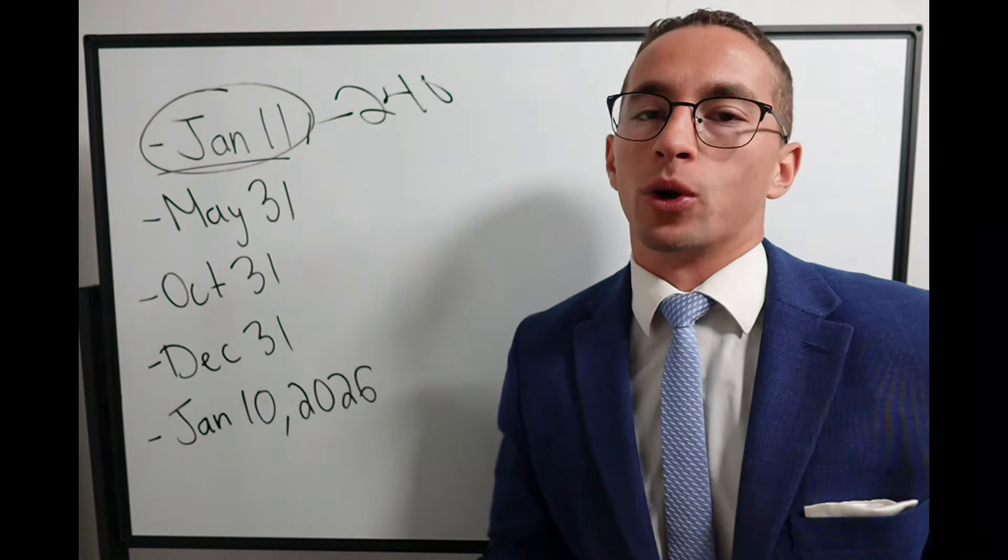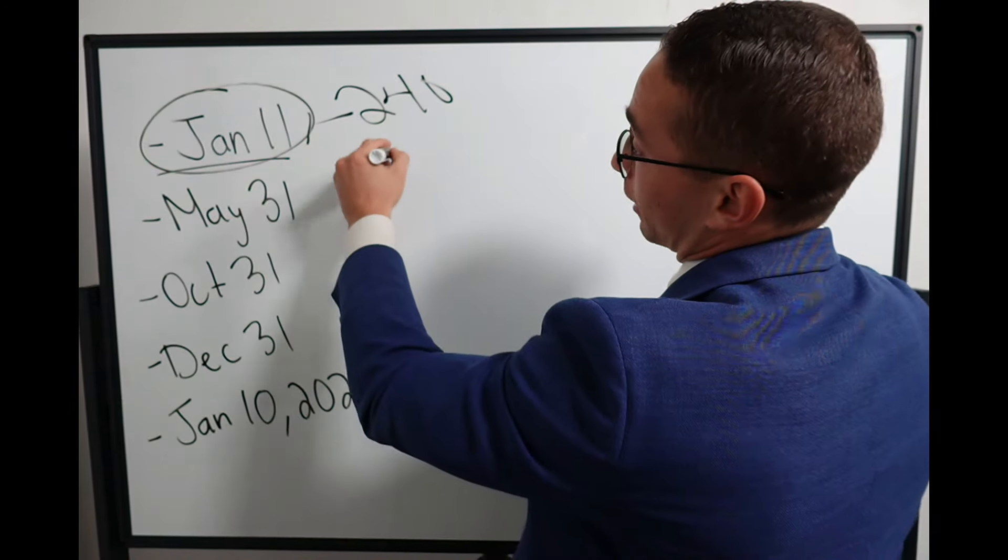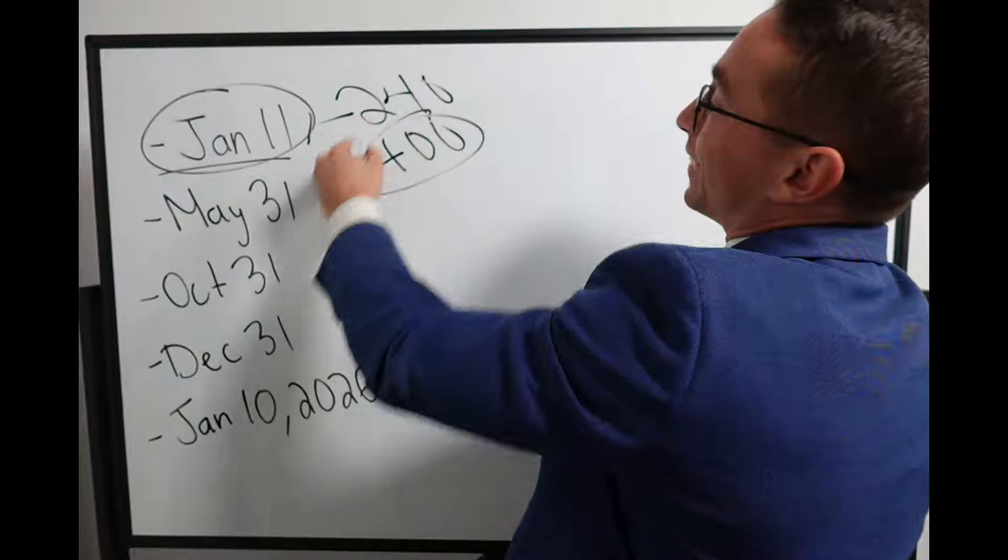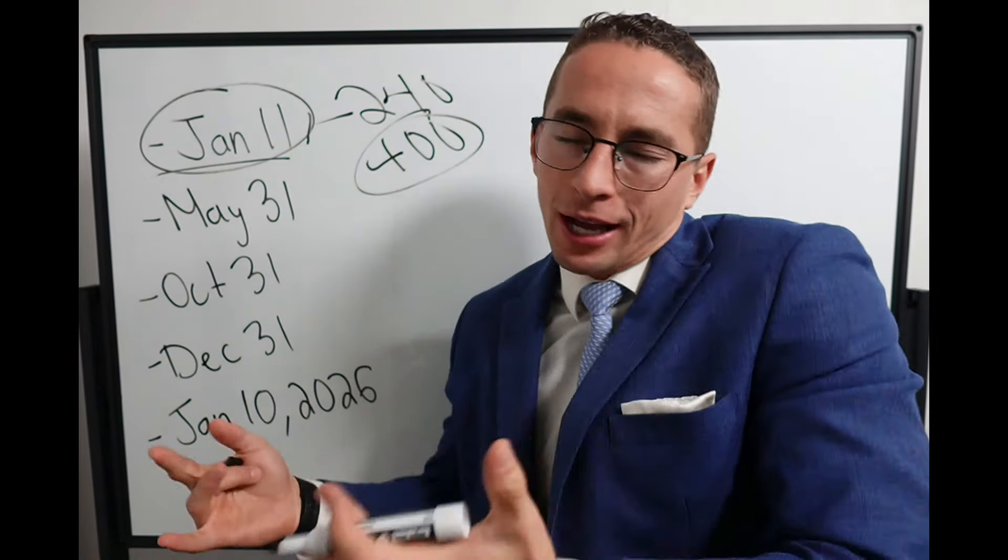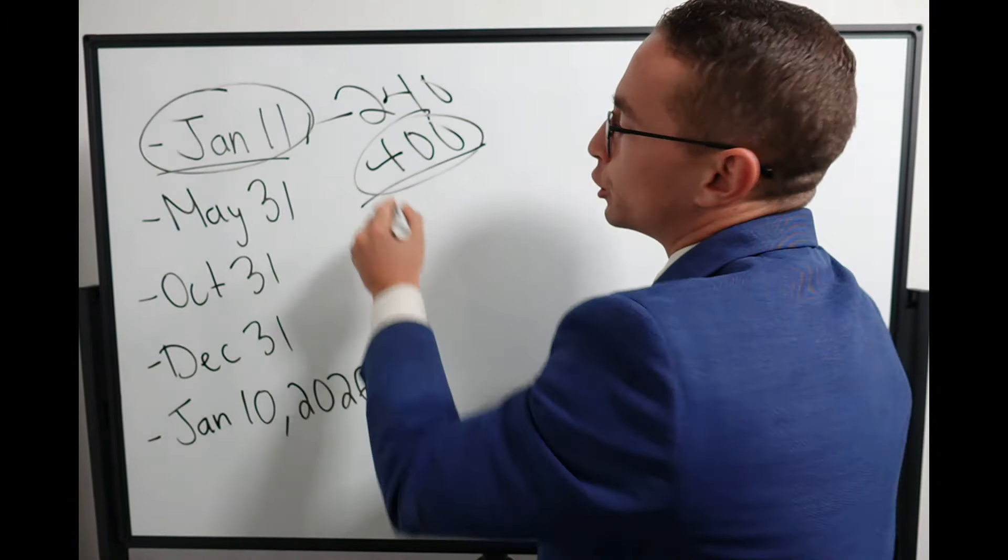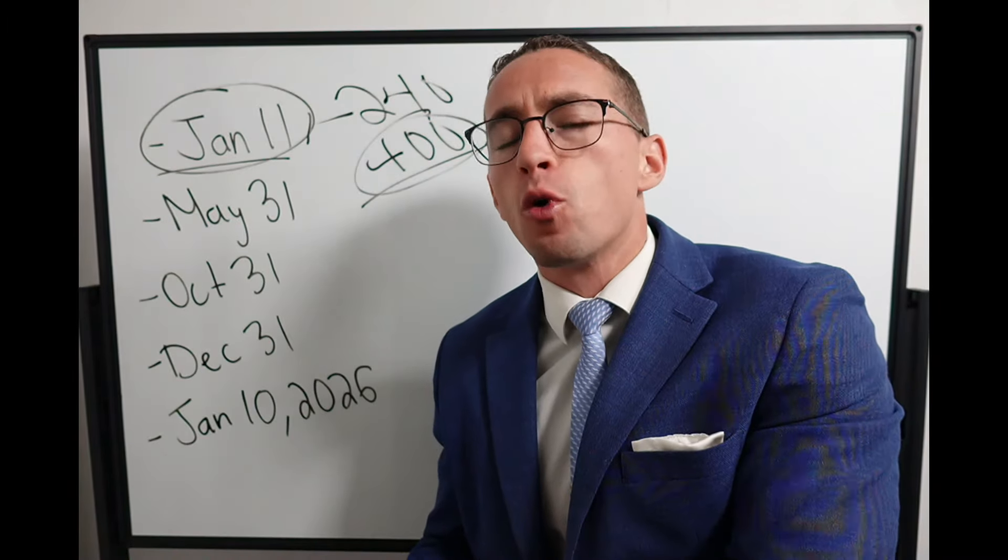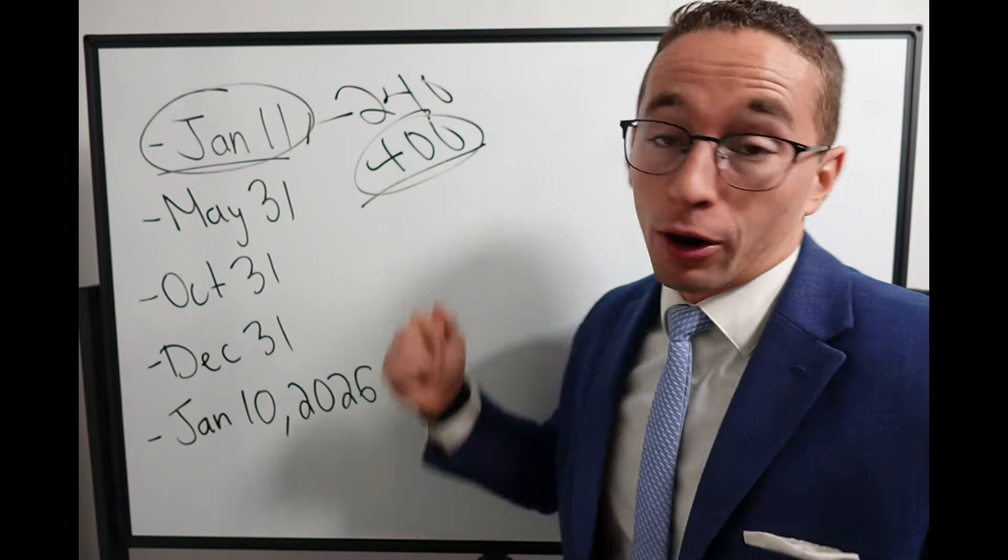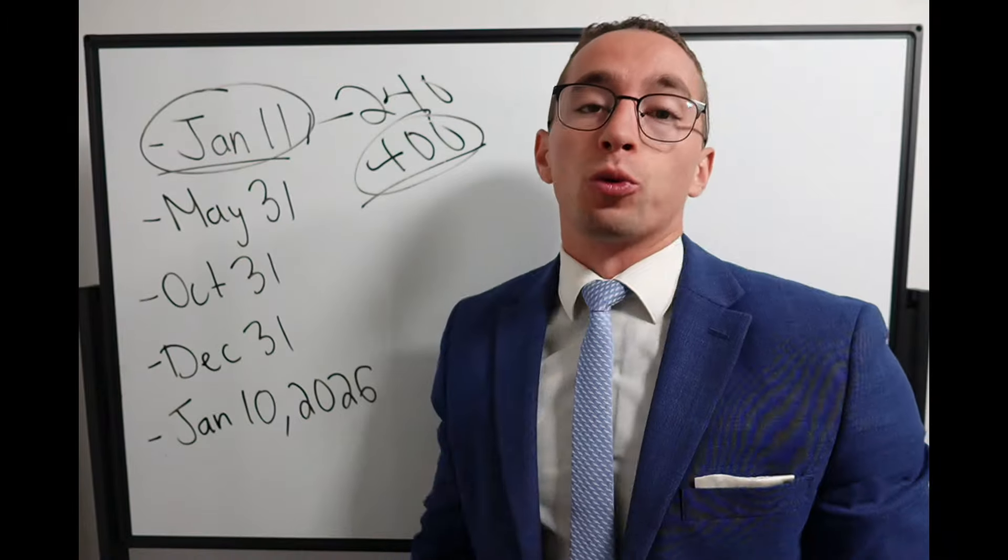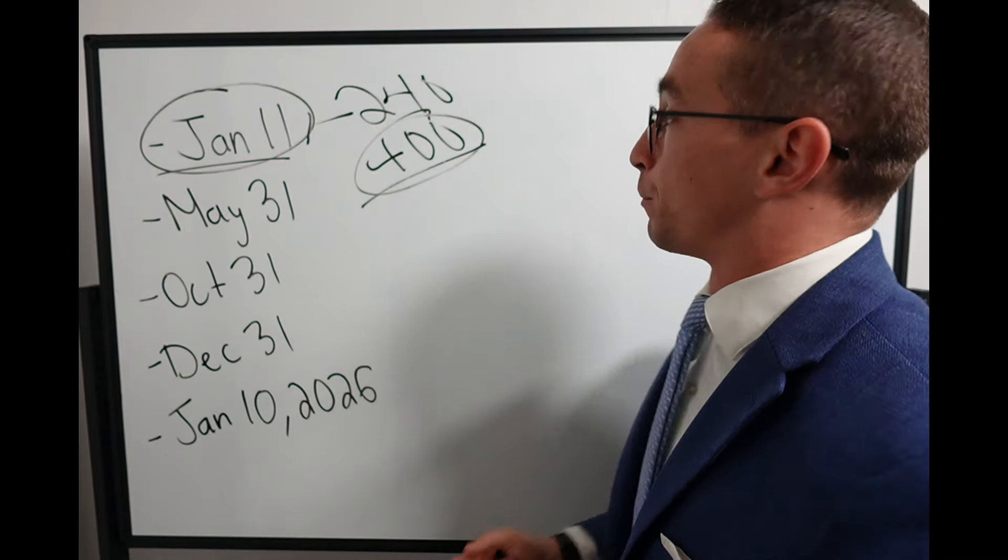You can retire January 11th and have, let's say, 400 hours of annual leave paid out to you. If you didn't know, any unused annual leave you have on the books at retirement, they're going to cut you a check for. So if you have 400 hours, they're going to cut you a check as if you had worked 400 hours, which is a great perk in retirement.